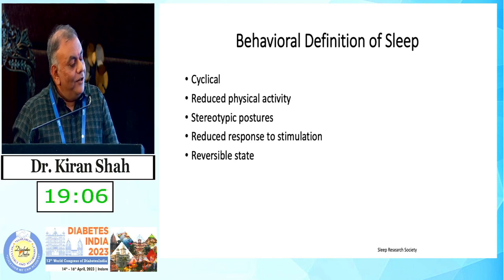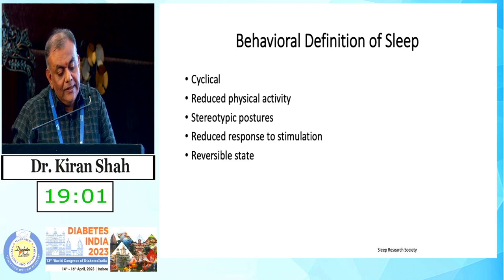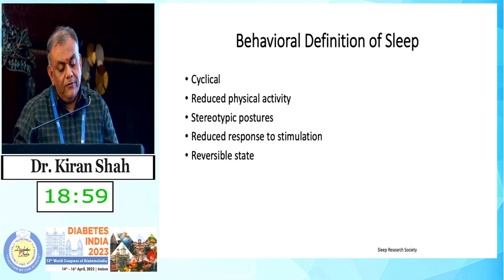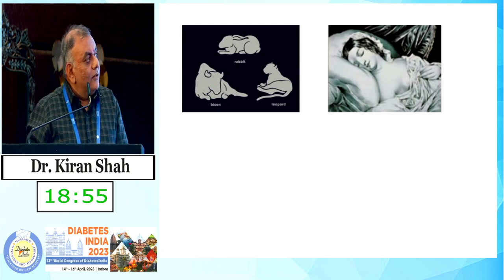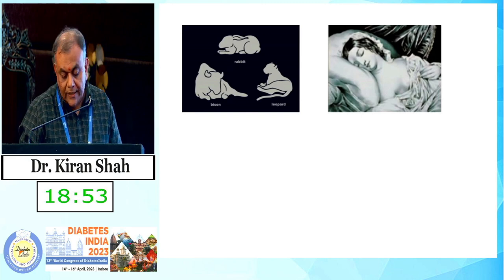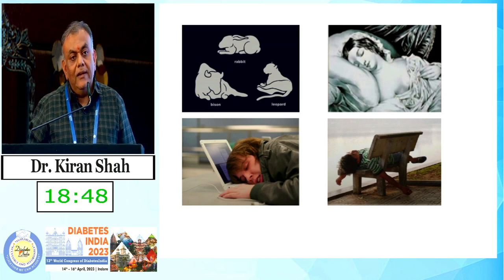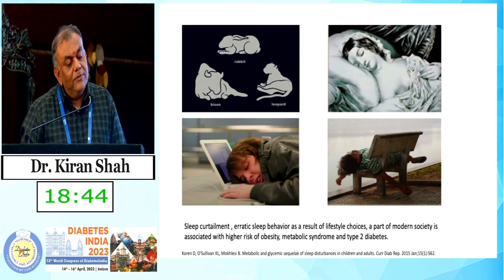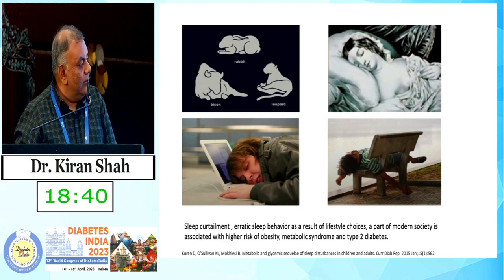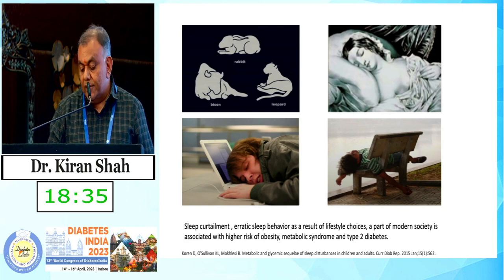This is the behavioral definition of sleep. It's cyclical, with reduced physical activity, stereotypic postures, reduced response to stimulation, and a reversible state. These stereotypical postures are seen across various species. We also see young, healthy individuals in deep sleep — this actually forms an erratic sleep behavior, which is a result of lifestyle choices in modern society and is associated with a higher risk of metabolic syndrome and type 2 diabetes mellitus.